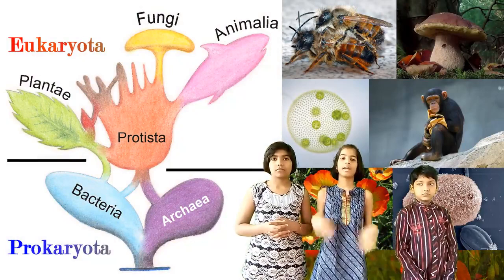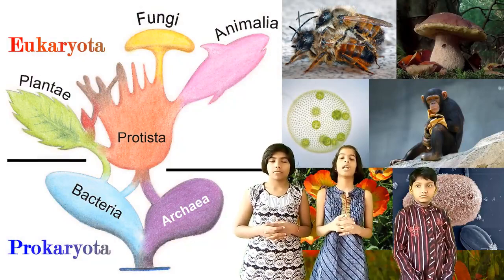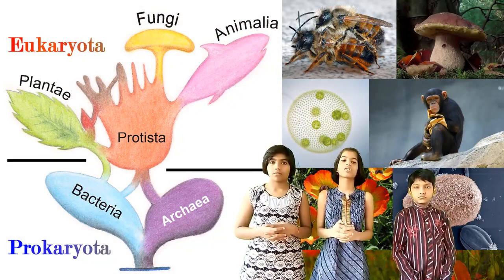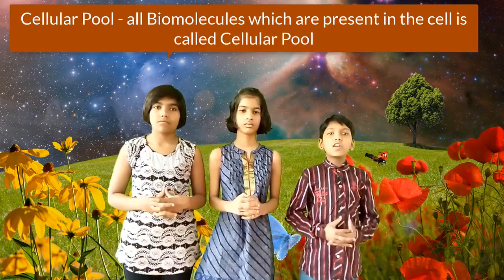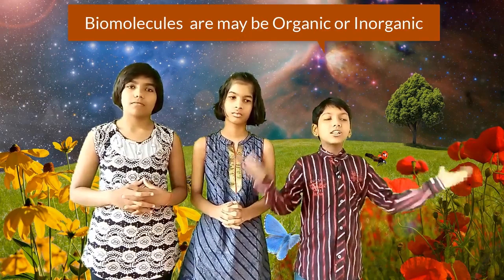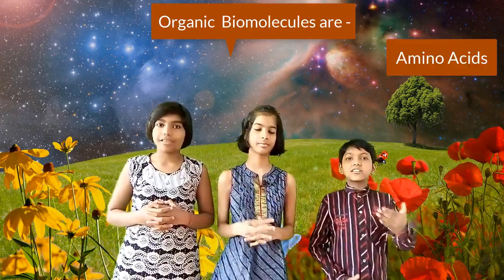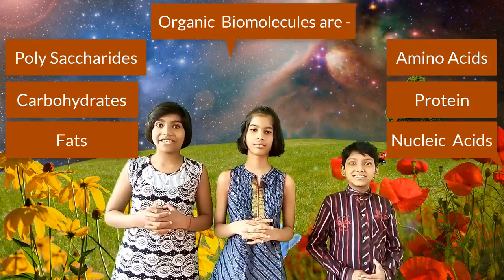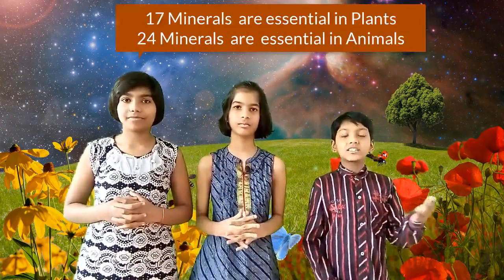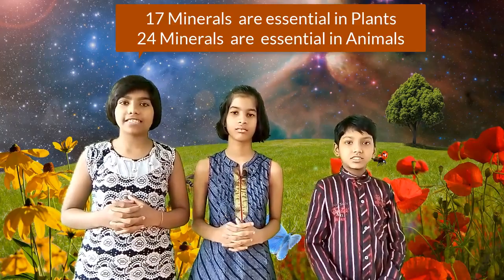Animal bodies, plant bodies, and bacteria are made up of cells, and cells are made up of molecules. Every molecule has its own specific function — this is called the cellular pool. All biomolecules present in the cell together form the cellular pool. Biomolecules may be organic or inorganic. Organic biomolecules include amino acids, polysaccharides, proteins, carbohydrates, nucleic acids, and fats. Inorganic molecules include minerals and water. 17 minerals are essential for plants, and 24 minerals are essential for animals.